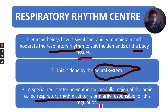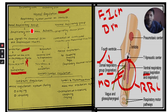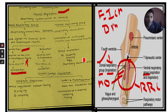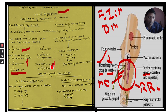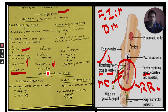Now the inspiratory center in the dorsal respiratory group sends signals for relaxation of the same muscles. Therefore the thoracic cavity volume and pulmonary cavity volume decrease. When thoracic cavity volume decreases, pressure increases according to Boyle's law. The pressure in the lungs is higher than atmospheric pressure, so air goes outside — that is called expiration. In this way inspiration and expiration are regulated by the dorsal respiratory group.